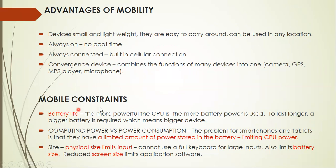Now the constraints with regards to mobile devices. One is your battery life. The more powerful the CPU is, the more battery power is used. To last longer, a bigger battery is required, which means a bigger device. To keep devices small, you have less power available for your CPU. This is about computing power versus power consumption, which relates to your battery.